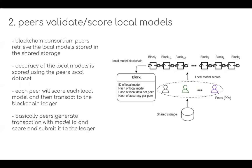The second function is peer validation — peers measure the accuracy score of the local models. Blockchain consortium peers retrieve the local models stored on the shared storage. When executing the transaction, peers take the local model updates from shared storage and score the accuracy of each local model using their own local dataset. Each peer scores each local model and transacts the result to the blockchain ledger, generating a transaction with the model ID and the accuracy score.